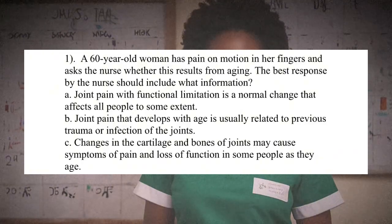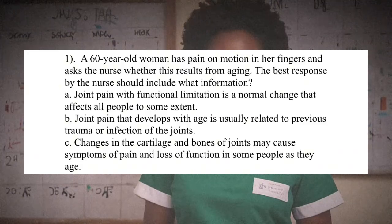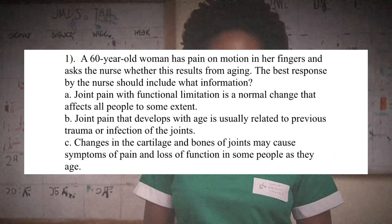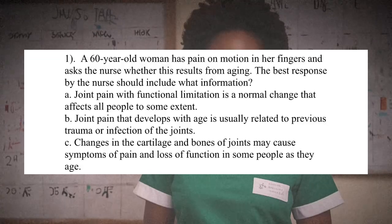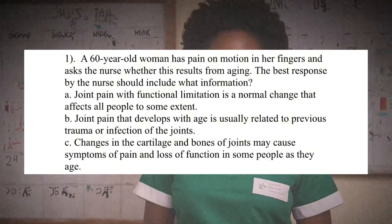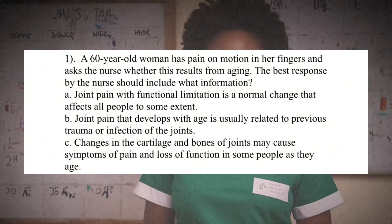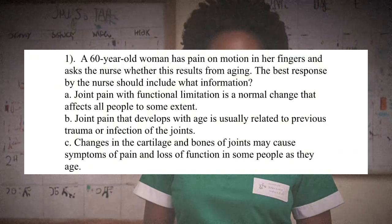The correct answer is C. Cartilage destruction in the joints affects the majority of those affected by the age of 40, and when the destruction becomes symptomatic, osteoarthritis (OA) is said to be present. Degenerative changes cause symptoms after age 50 or 60, but more than half over age 65 have x-ray evidence of osteoarthritis. Joint pain and functional disability should not be considered a normal finding in aging persons. Osteoarthritis is not a systemic disease, but is usually caused by a known event or condition that directly damages cartilage or causes joint instability.